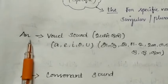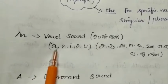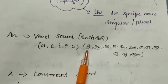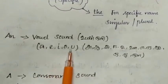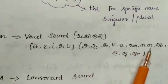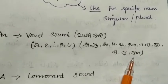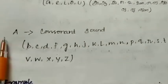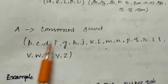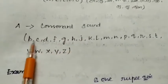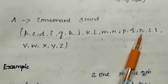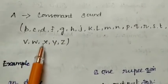We use 'an' not only before vowel letters but before vowel sounds. The vowel letters are: a, e, i, o, u. We have to use 'an' before vowel sounds and 'a' before consonant sounds. The consonants are: b, c, d, f, g, h, j, k, l, m, n, p, q, r, s, t, v, w, x, y, z.